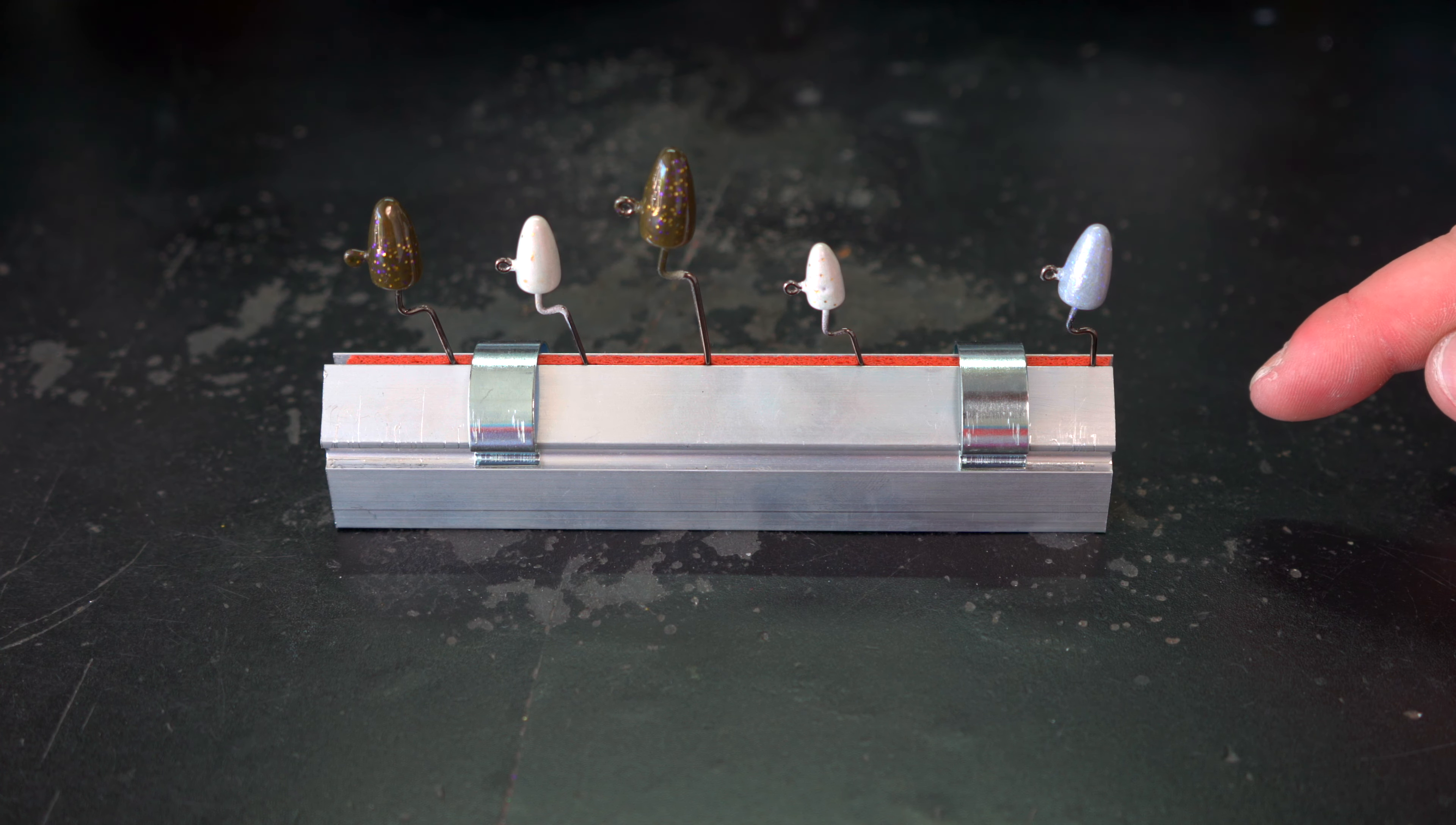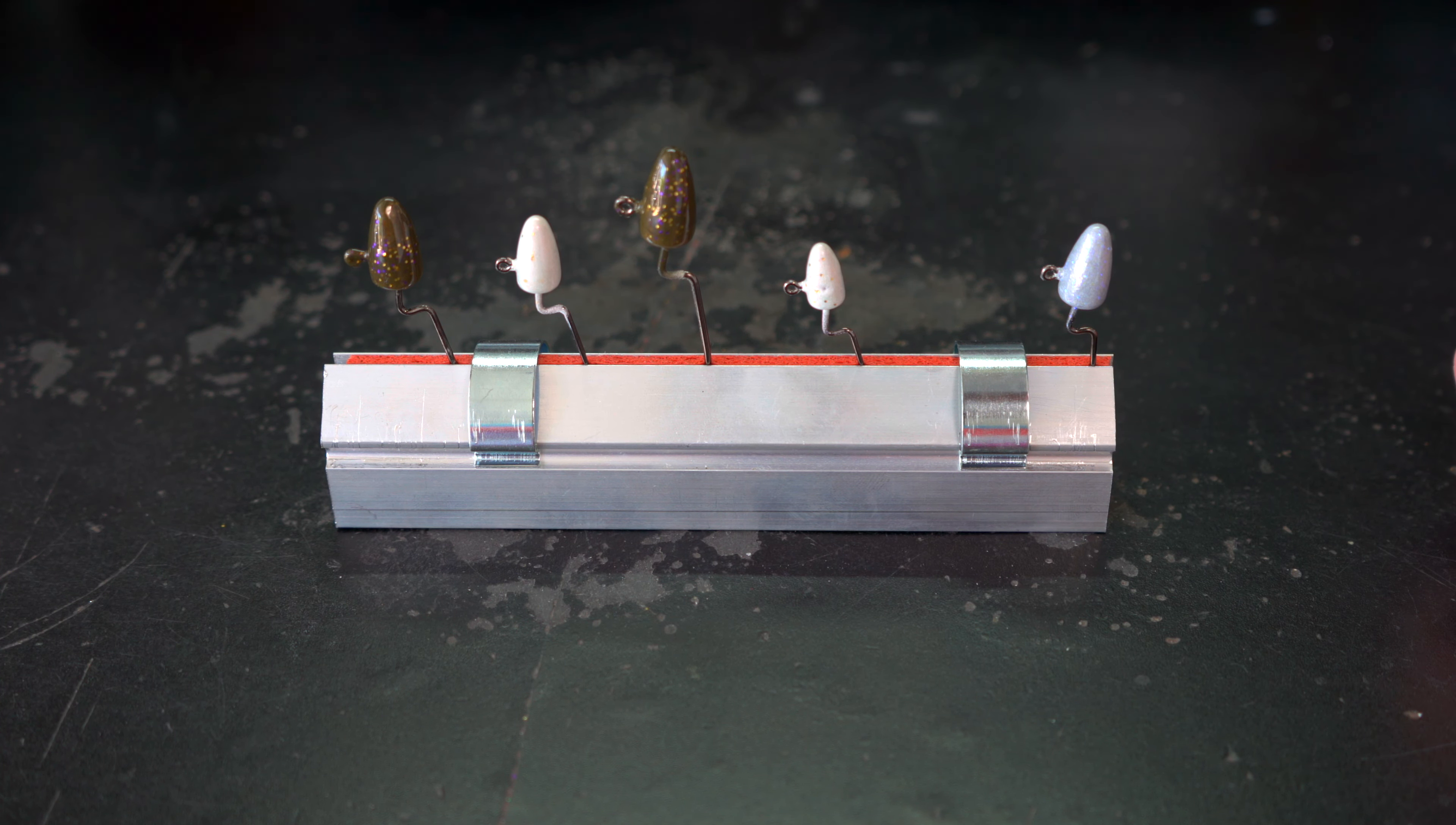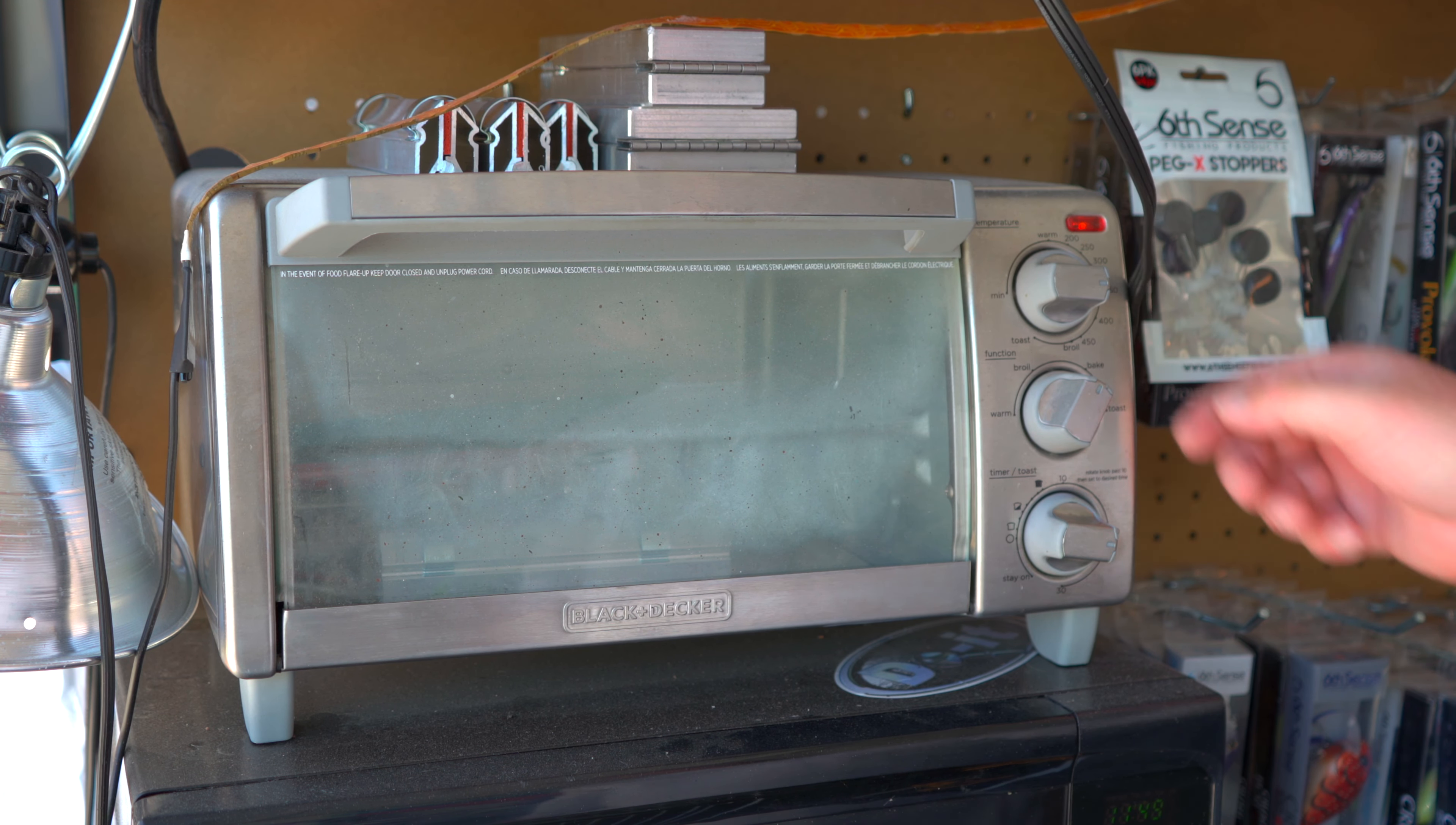If you guys already have one of these clamping racks, I highly recommend it. The benefit of these racks is that it positions these jigs upright. So if you have any extra paint, it will fall down the shank of the hook rather than bubbling up on the top when you hang them upside down. We are now ready to bake our jigs. So what we're going to do is open up our toaster oven, set our clamping rack in, close it up. We're going to set it to 20 minutes on the bake setting at 350 degrees.